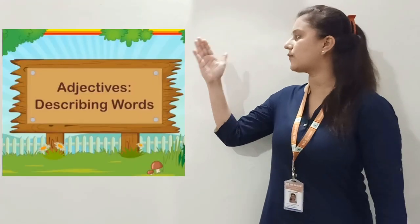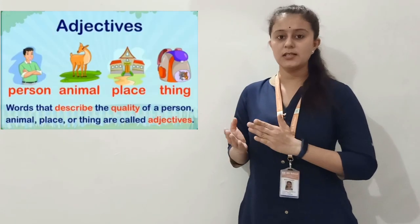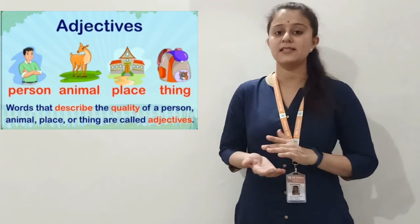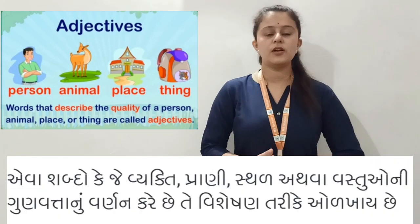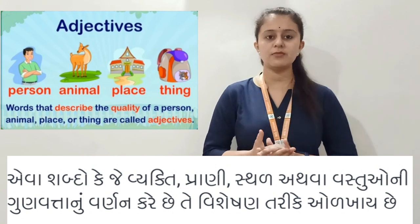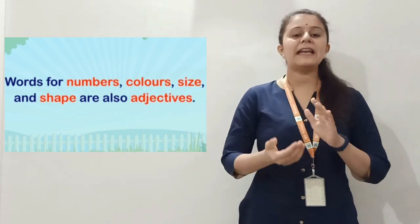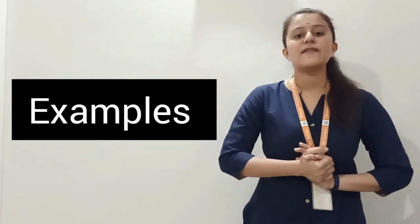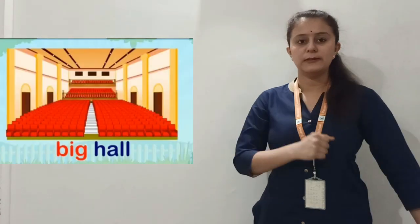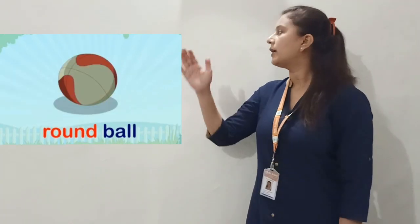Adjectives are varnan shabdo — describing words. Words that describe the quality of a person, animal, place, or things are known as adjectives. The words for number, size, shape, and colors are also known as adjectives. For example: big hall, green parrot, smart boy, round ball, one head, and two shakes.